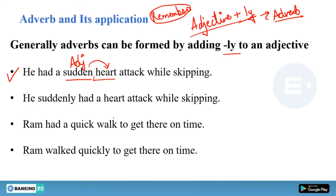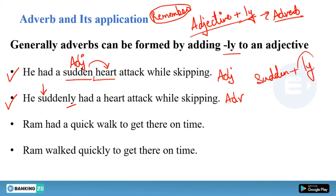Here 'sudden' is an adjective because it is qualifying the noun 'heart attack.' Whenever a word qualifies a noun, it should be an adjective, not an adverb. But in the sentence 'He suddenly had a heart attack while skipping,' 'suddenly' is an adverb of manner. We simply added L-Y to 'sudden' and it became an adverb.